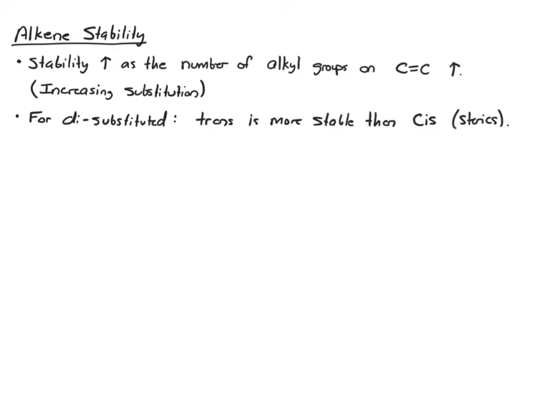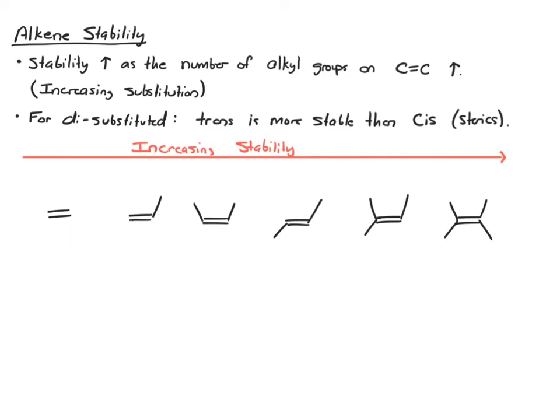So let's look at a series of alkenes with increasing substitution, and in this list, we're increasing stability. So we start down here with no groups attached, and then we're adding the number of carbon groups as you go from left to right.